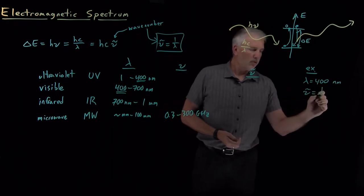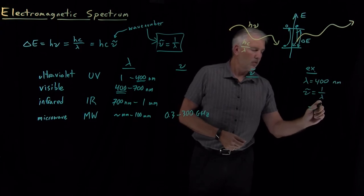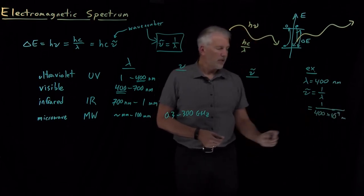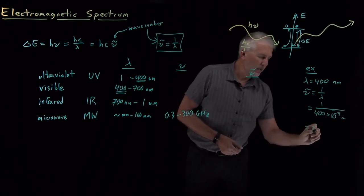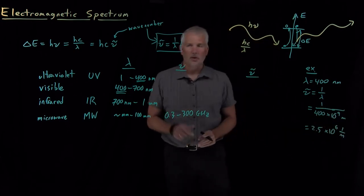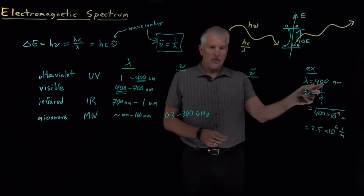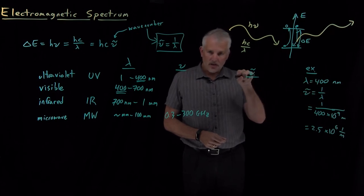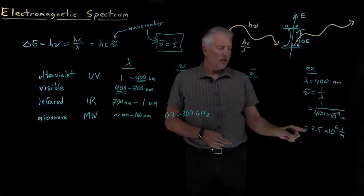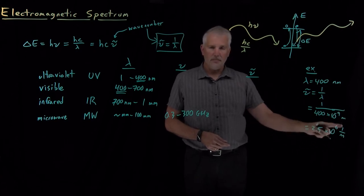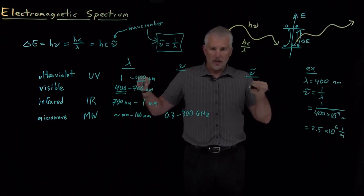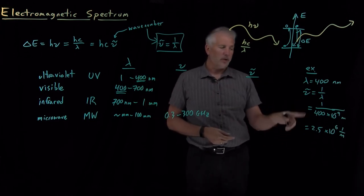That's just one over the wavelength according to our definition: one over 400 nanometers, or one over 400 times 10⁻⁹ meters, which equals 4 times 10⁻⁷ meters. When I do that division, I get 2.5 times 10⁶, and my units are inverse meters. So the wave number is telling me that 2.5 times 10⁶ — two and a half million — of those waves fit inside one meter. The electromagnetic field oscillates up and down two and a half million times over the course of one meter. That's what the wave number is telling us.